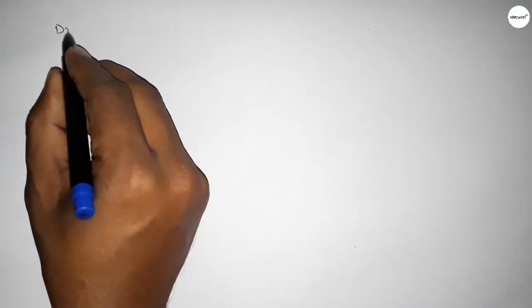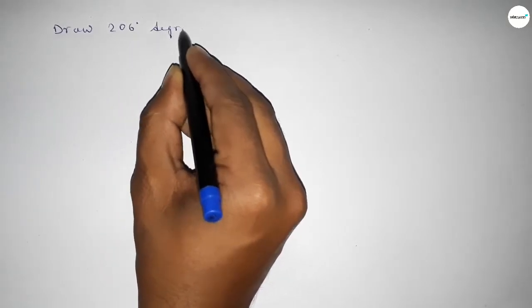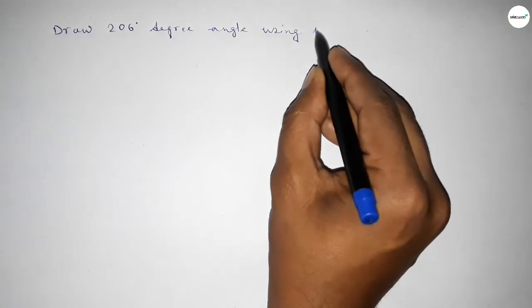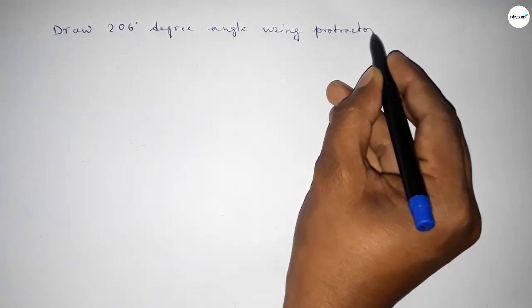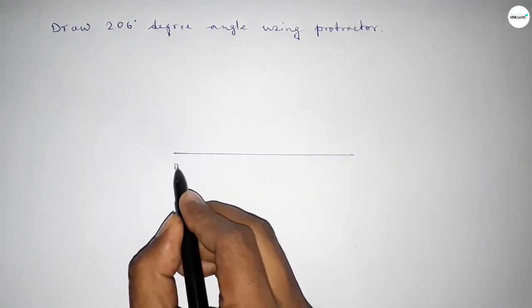Hi everyone, welcome to SSR Classes. Today in this video, we will draw a 206 degree angle using a protractor. Let's start the video. First of all, we draw a straight line of any length, marking point B here and point C here.